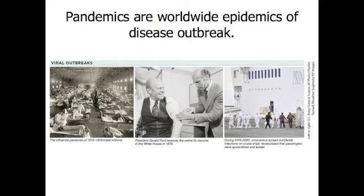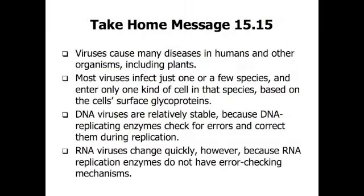In 2020, in response to the rapid and widespread spread of a new virus called coronavirus, most of the world self-isolated. Businesses and schools closed and health care systems were severely overtaxed by the number of COVID-19 cases. Within only a few months, the virus had caused 250,000 deaths with many more expected. DNA viruses are relatively stable because DNA-replicating enzymes check for and correct errors, but RNA viruses change quickly because RNA-replicating enzymes do not have error-checking mechanisms.